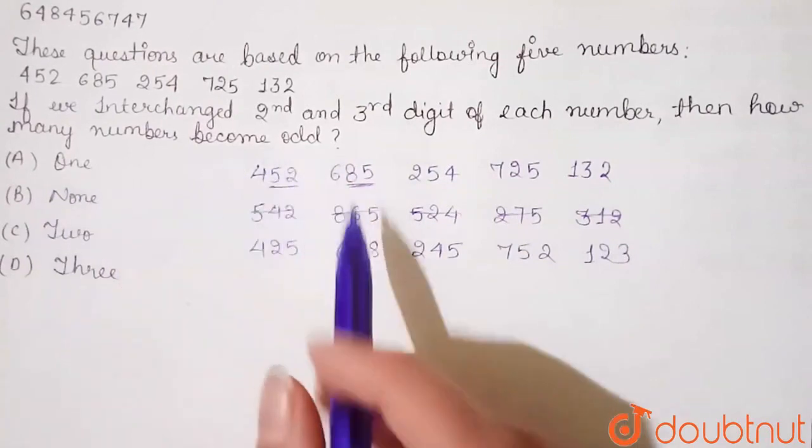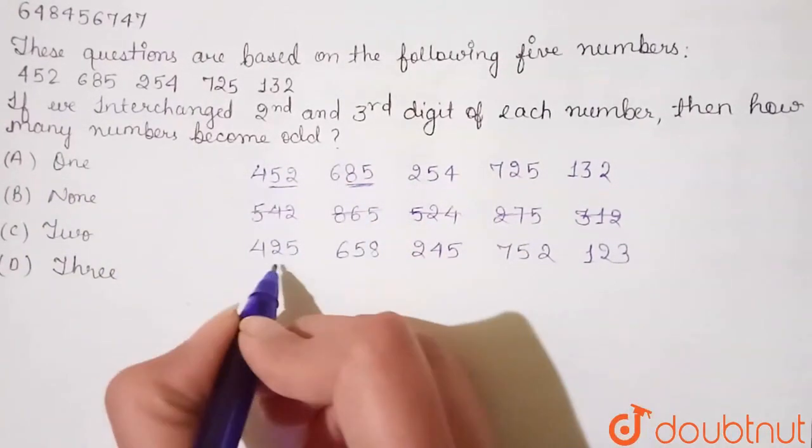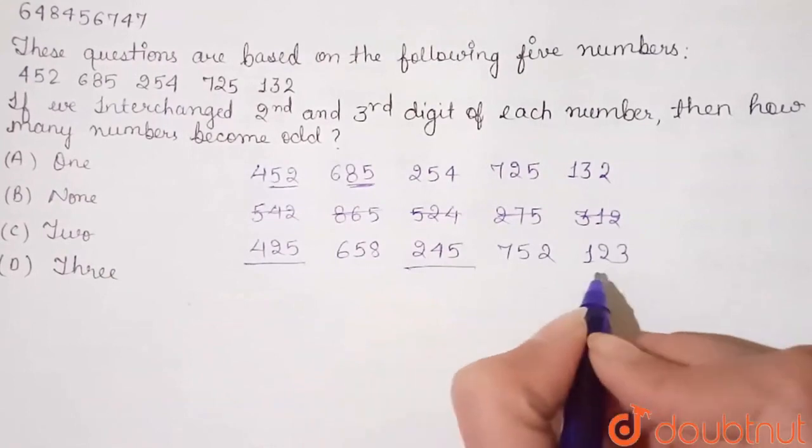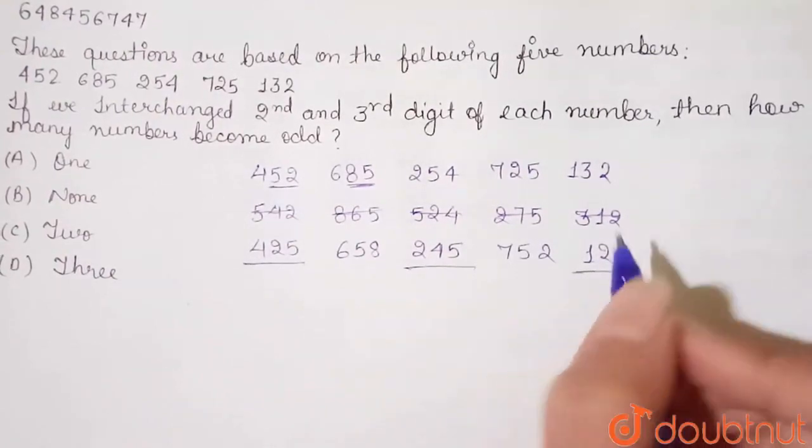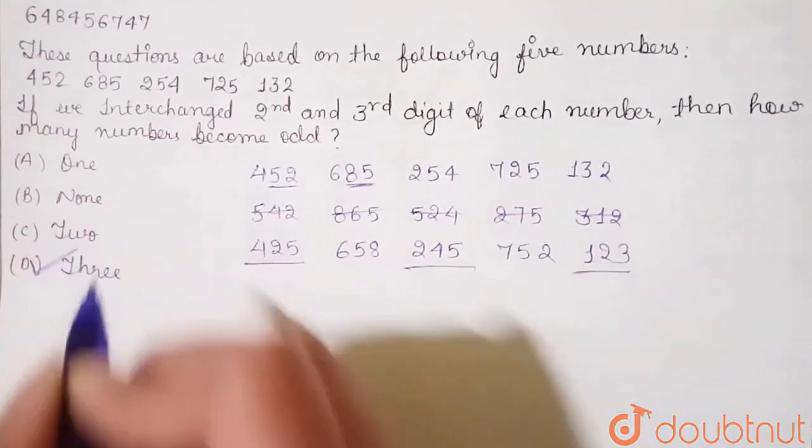Then how many numbers are odd? This number is odd, this number is odd, this number is odd, and this number is odd. So our correct answer will be option number D. Thank you.